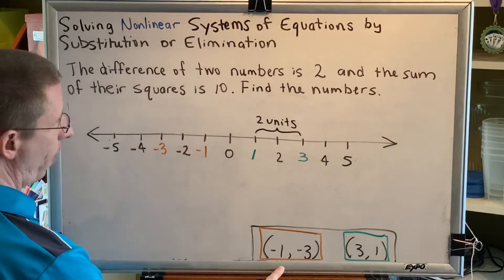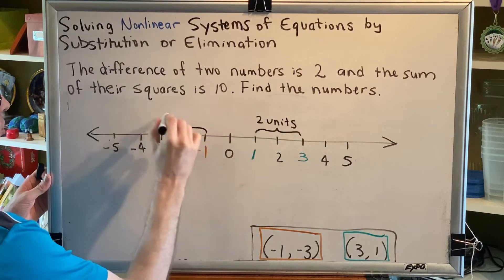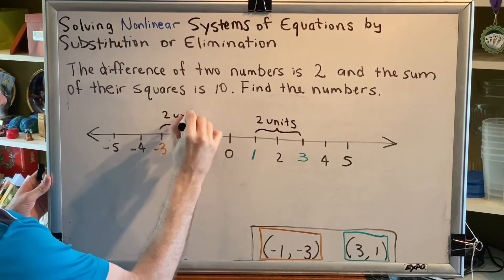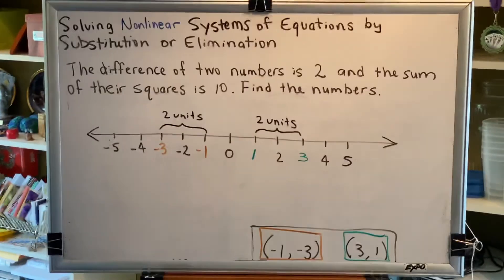Similarly with our other point, negative 1 and negative 3 are also two steps apart, two units. So the difference of those two numbers is 2.